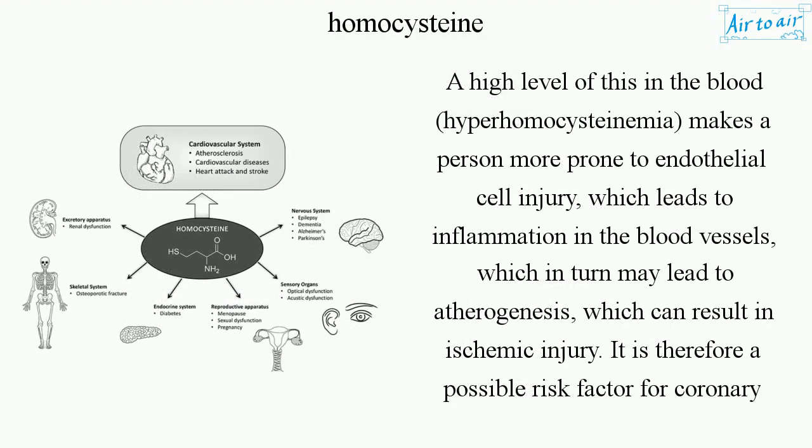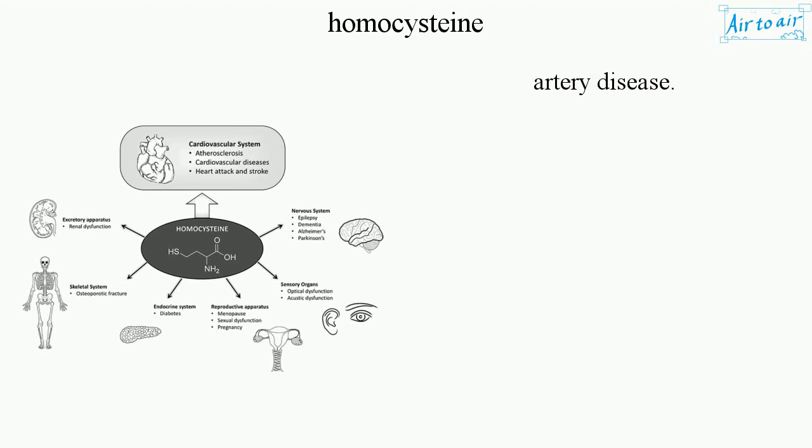A high level of this in the blood — hyperhomocysteinemia — makes a person more prone to endothelial cell injury, which leads to inflammation in the blood vessels, which in turn may lead to atherogenesis, which can result in ischemic injury. It is therefore a possible risk factor for coronary artery disease.